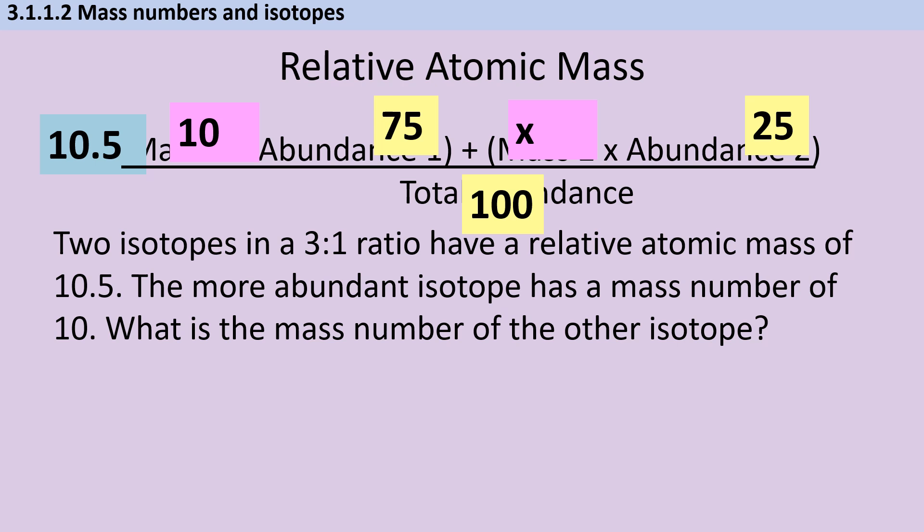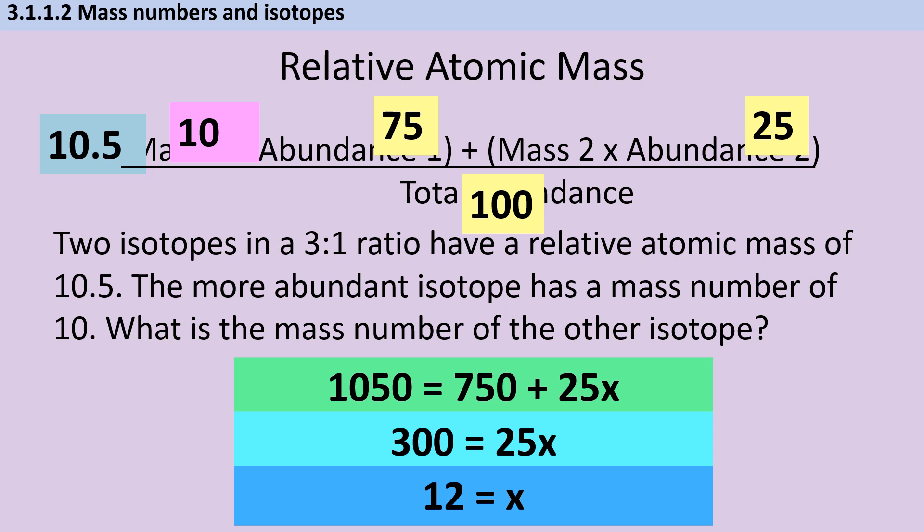Now at this point, I want to start multiplying out some of these brackets and crucially stopping this being a fraction because fractions are a pain. So I'm going to multiply everything by 100. And that's going to give me 1050 is equal to 750 plus 25X. So if I take 750 away from both sides, then I'm left with 300 is 25X and therefore X is 12.